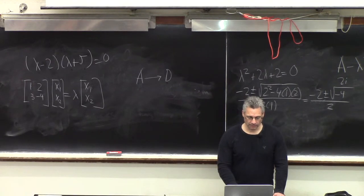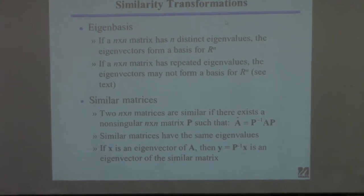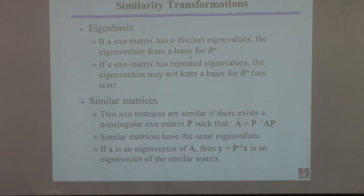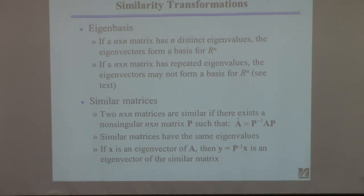Here's some terminology. If you have an N by N matrix and it has N distinct eigenvalues, then the eigenvectors will be linearly independent. If you have repeated eigenvalues, it may not be possible to find linearly independent eigenvectors — that's discussed more in the text, but it's beyond the scope of what we can cover. So let's just assume that does not happen; we're not going to consider repeated eigenvalues further.